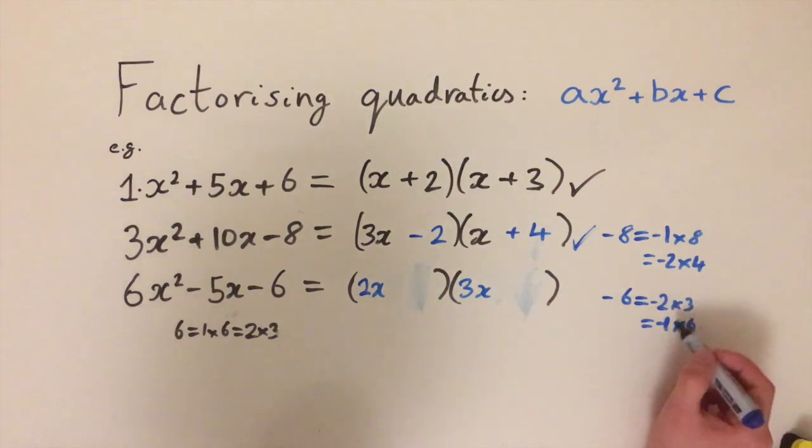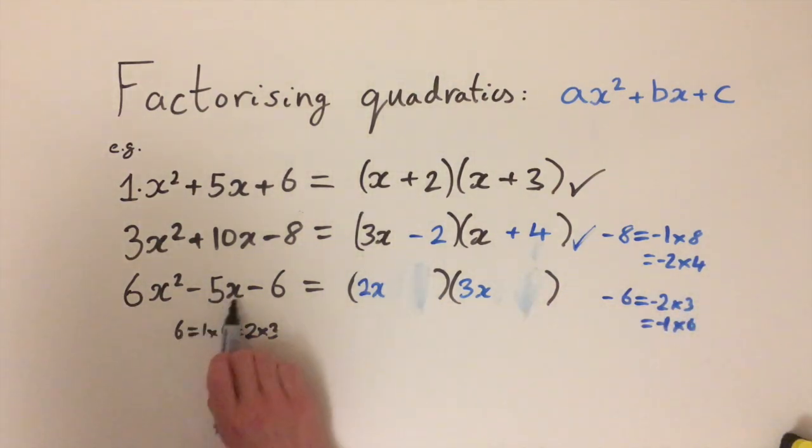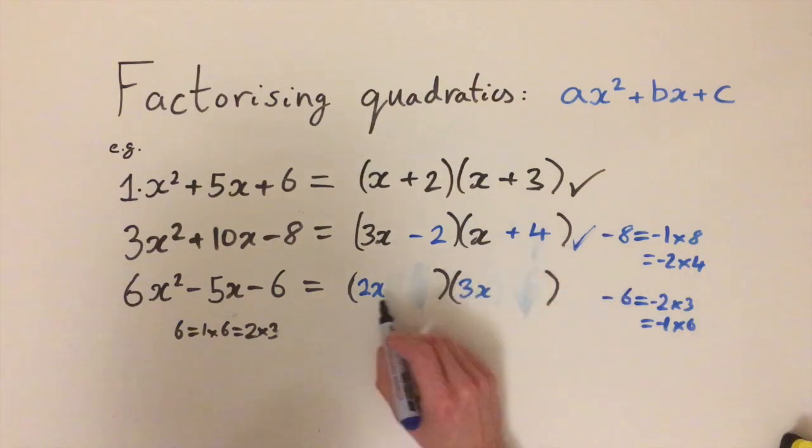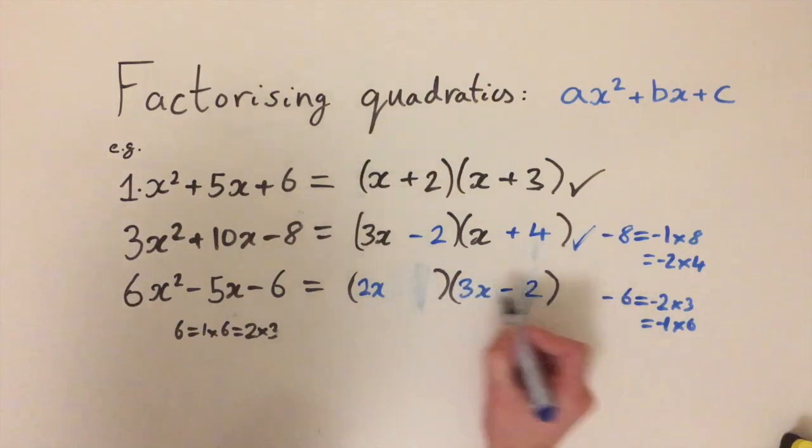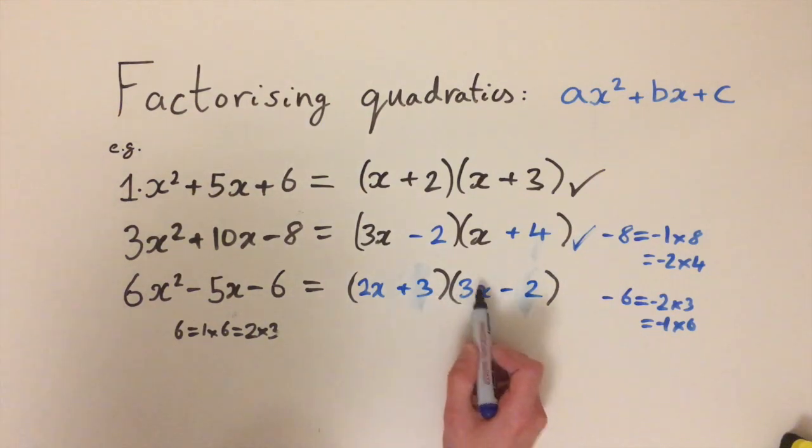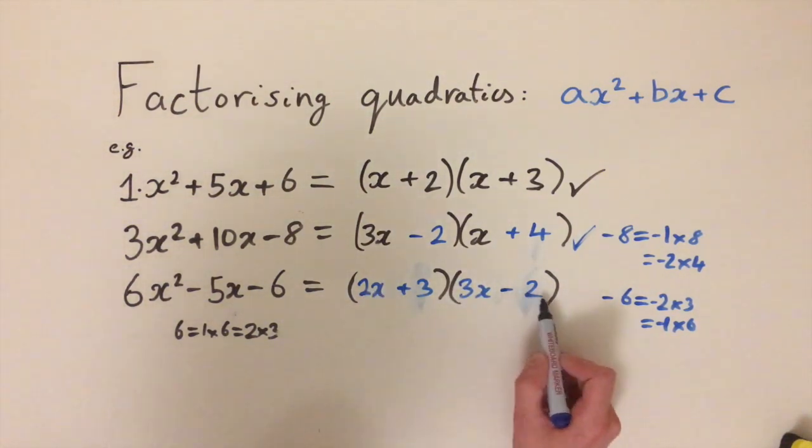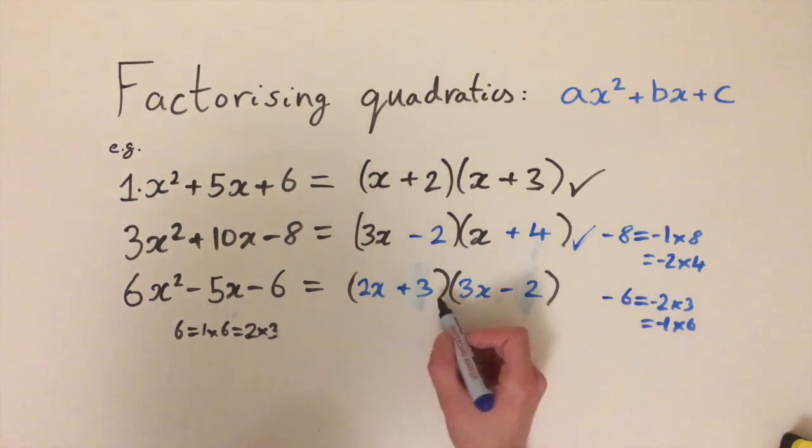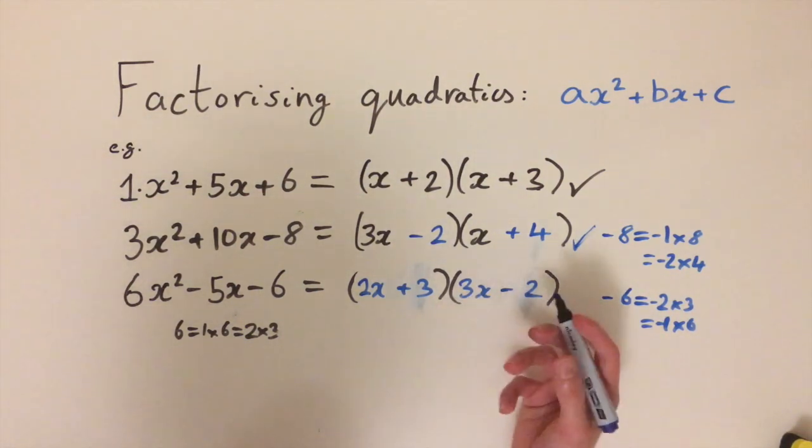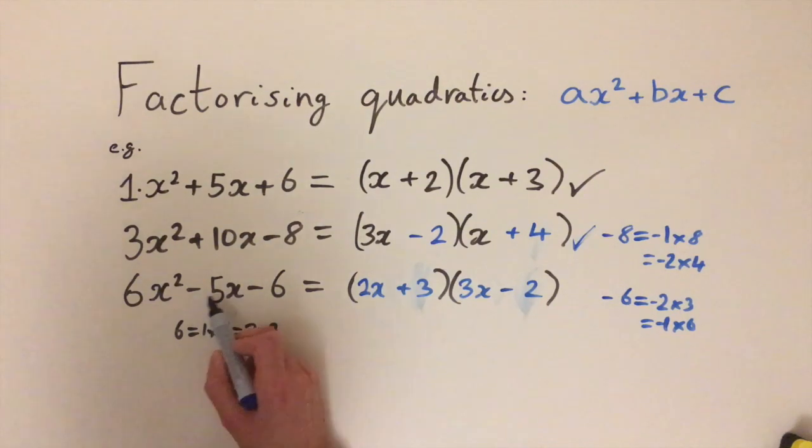So now let's try a few of these combinations to see if we can get the 5x here. So how about we do minus 2 here and plus 3. What are we going to get? We're going to get 3 times 3x which gives us 9x squared, 2x times minus 2 gives us minus 4. So we'll actually get plus 5x. So we've got the 5, we just need the minus 5.